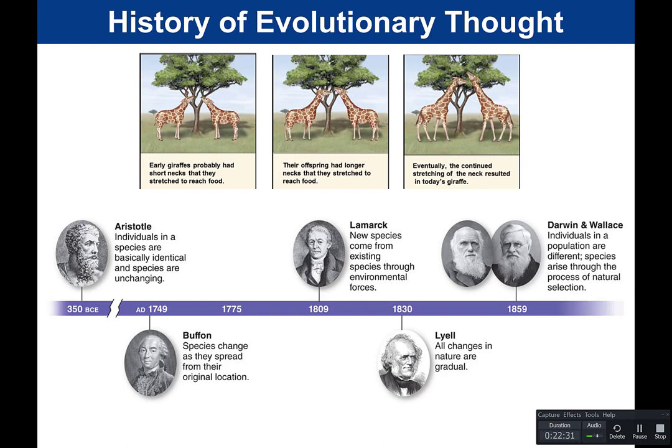Next came French naturalist Georges Buffon in 1749. He studied fossils — imprints or remains of organisms that lived in the past — and observed similarities between particular fossils and living animals. He suggested that certain fossil forms may be ancient versions of similar living species, and that these species can change as they spread from their original location.